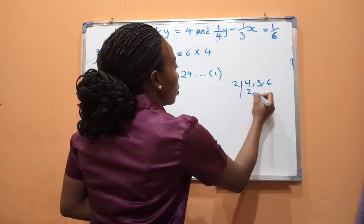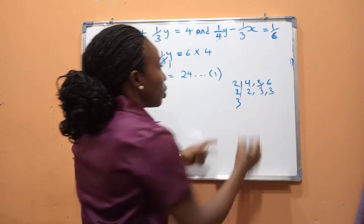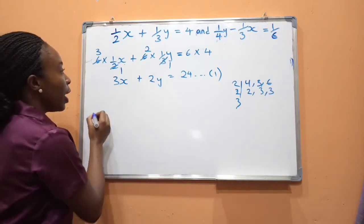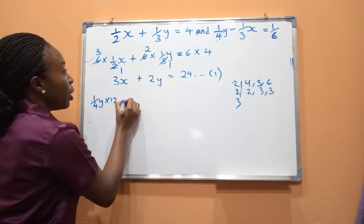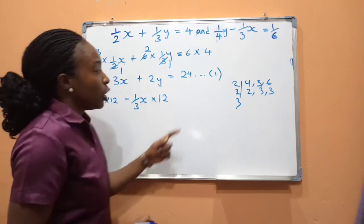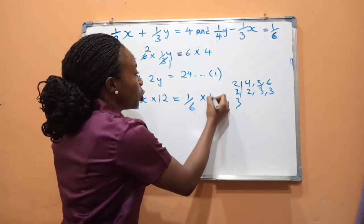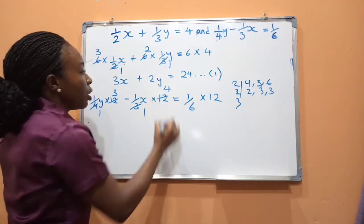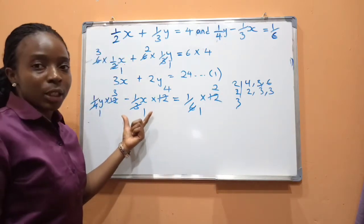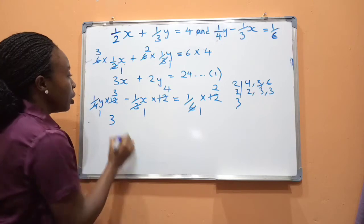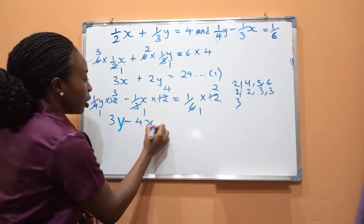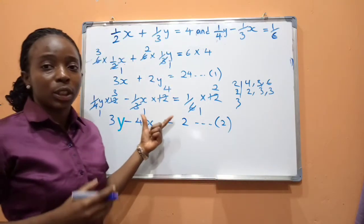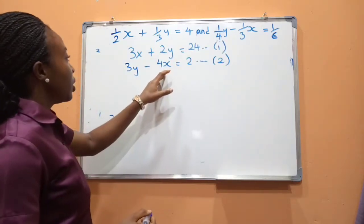For the second equation, the denominators are 4, 3, and 6. The LCM is 12. Multiplying each term by 12: (y/4) × 12 − (x/3) × 12 = (1/6) × 12. Simplifying: 12÷4 = 3, 12÷3 = 4, 12÷6 = 2. This gives 3y − 4x = 2 — equation 2.